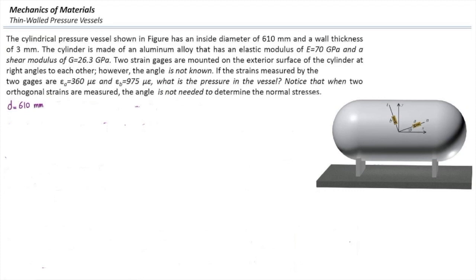The internal diameter is 610, radius is 305 mm, thickness is 3, modulus of elasticity and G are given, and I can determine Poisson's ratio from the relationship between three material properties.